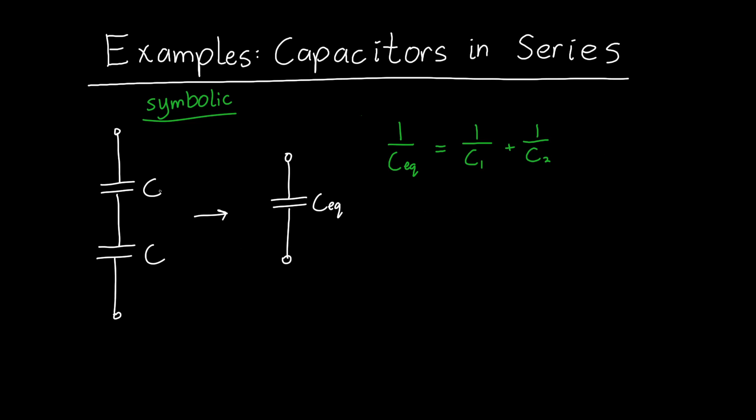Now in this case C1 and C2 are both the same, they're just C. And so this is one over C plus one over C, which is just two over C. So this is one over the equivalent capacitance. Now this means that the equivalent capacitance, we just need to invert this, is C over two.